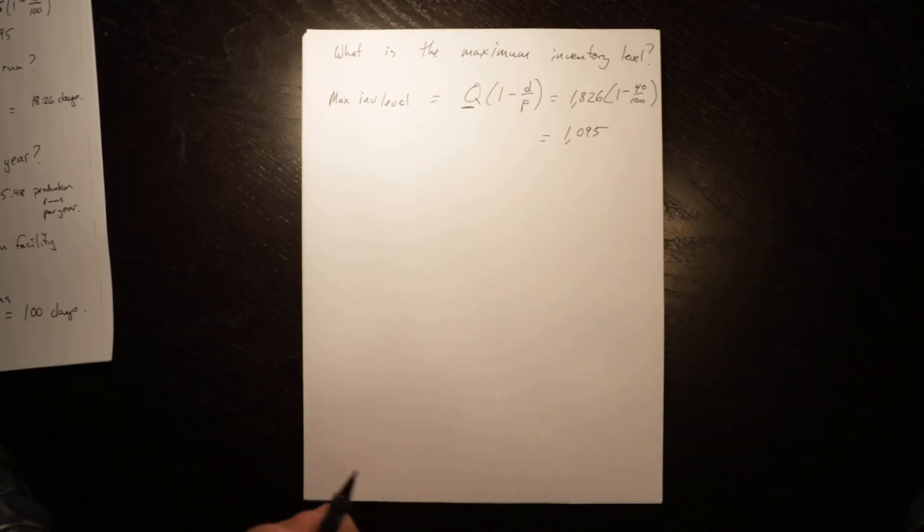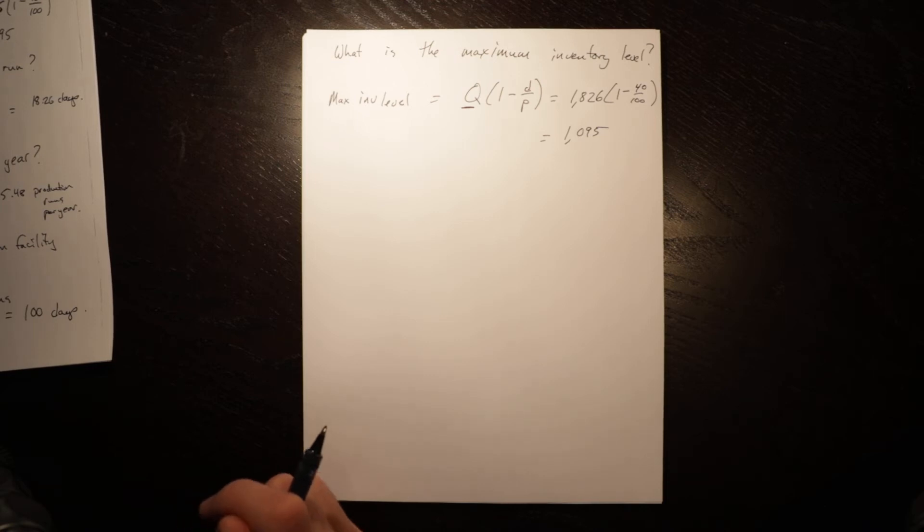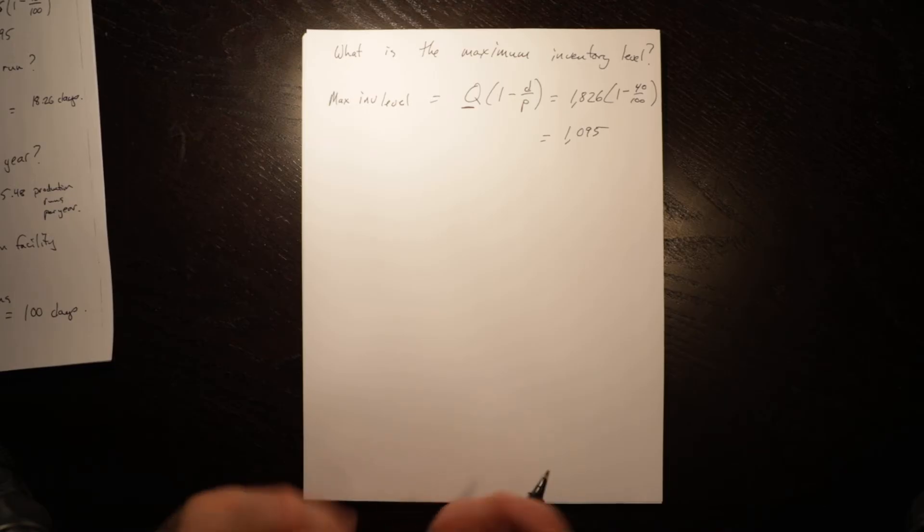So even though we produce 1826 units, our inventory never goes above 1095 because as we're producing it, we're also using it up.